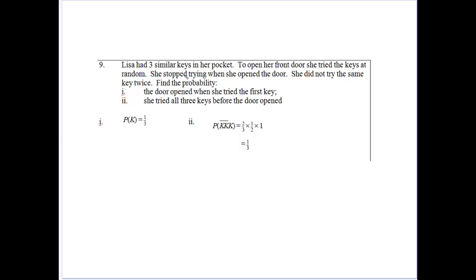This time Lisa has got three keys in her pocket. And to open the front door she tried the keys at random. She stopped trying when she opened the door. She did not try the same key twice. So find the probability that the key opened when she tried the first key. Well, she's got one in three chances. There's three keys. One's favourable. So she's able to get it on the first go at one third of a chance.